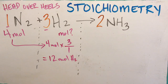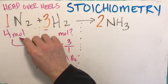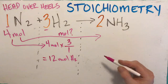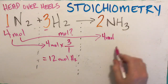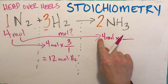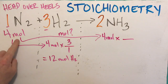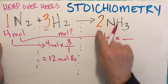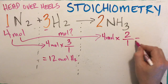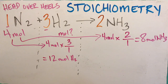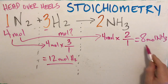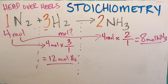How much ammonia could be produced? I take an arrow and bring four moles over to the ammonia column. Times my mole ratio — the head of the arrow is at the two, the heel of the arrow is at the one. Head over heels: two over one. That means I can make eight moles of ammonia. Easy enough. Those are the answers we got: twelve moles of hydrogen and eight moles of ammonia.